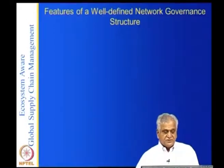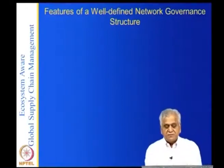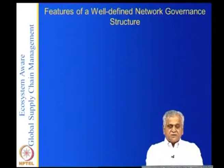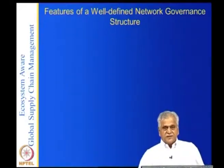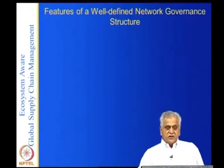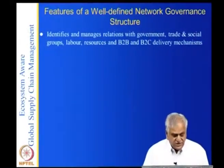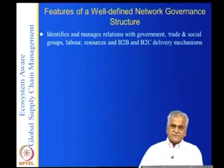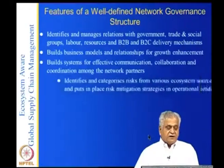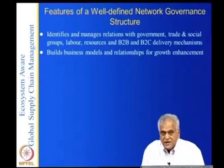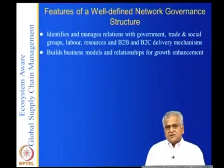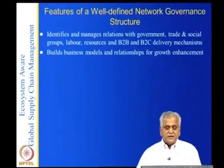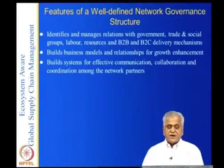Let us do a recap of what we did in the last two classes. The organization structure basically governs the delivery process — any network has to deliver products to customers, and somebody has to specify what the product is and how it is to be delivered. The governance structure identifies managers' relations with the government, trade, social groups, labor, resources, B2B and B2C delivery mechanisms. It also builds business models — whether it is outsourcing, doing it yourself, or a joint venture — and builds systems for effective communication, collaboration, and coordination among network partners.